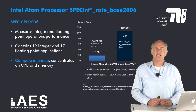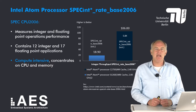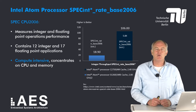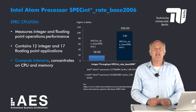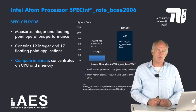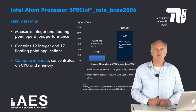SPEC 2006 is a set of benchmarks that measure integer and floating point performance of a processor. It contains 12 integer benchmarks that mainly process integers and 17 floating point applications that mainly process floating point data. All these benchmarks are compute intensive, meaning that they demand a lot of computing and perform very little, if any, input-output operations. As a result, they mainly measure CPU and memory performance.